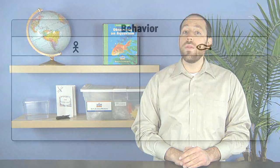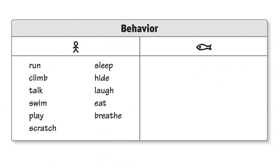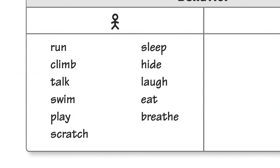Ask students to brainstorm a list of behaviors that they display every day and record their responses in the first column of the chart. Answers may include running, talking, swimming, sleeping, laughing, eating, breathing, and so on.